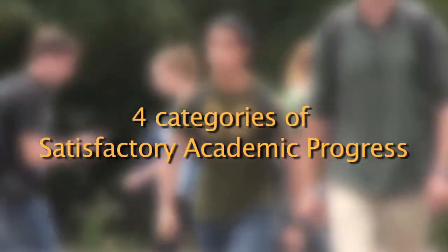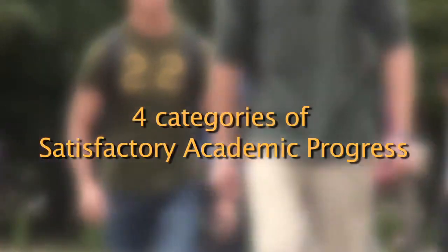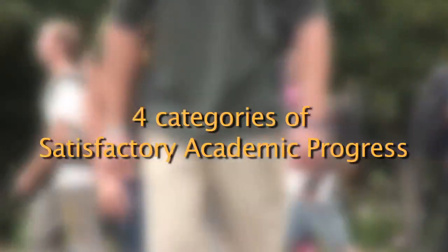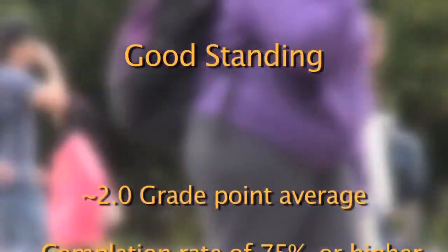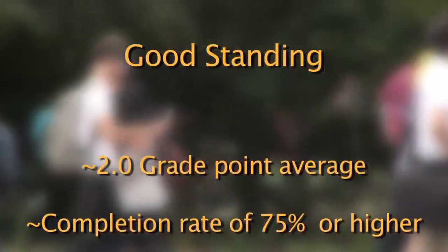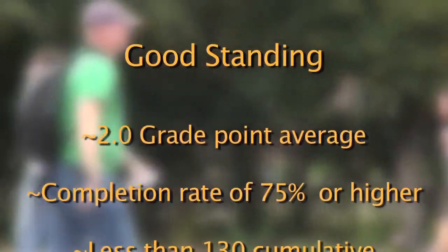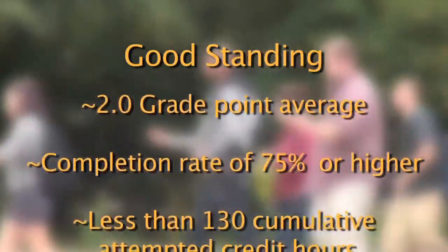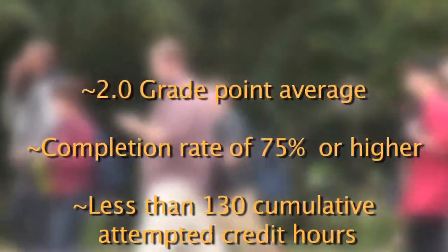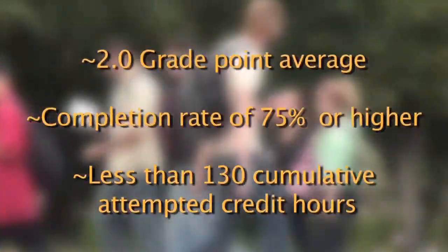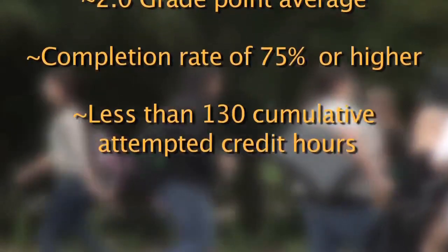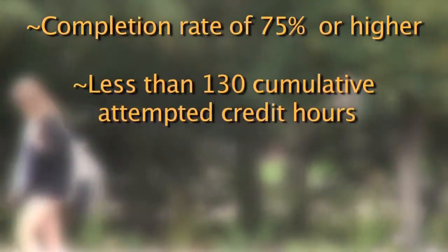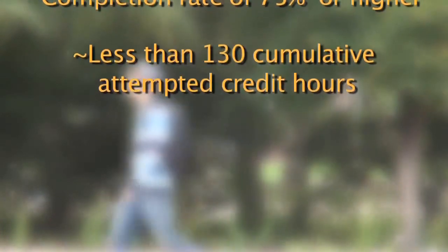There are four categories that your academic progress may fall into. The first is good standing. You are considered to be in good standing during the first 130 credit hours of coursework you attempt, by maintaining a cumulative grade point average of at least 2.0, by maintaining a cumulative completion rate of 75% or higher, and by having less than 130 total cumulative attempted hours.